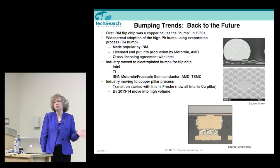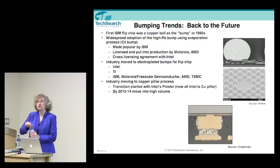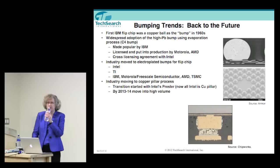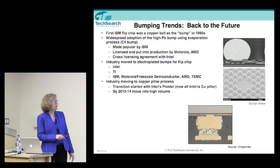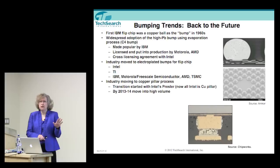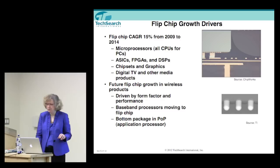The industry moved from evaporated bumps to plated bumps, which is pretty much what we use today — found in all Intel processors, TI, IBM, Motorola (now Freescale), AMD, and TSMC. The industry is now in the process of moving to something new called a copper pillar or copper post. I like to call this 'Back to the Future' — we started with copper and we're going back to copper. The difference is that on this post there's a small solder cap on top. Intel started this transition with the Pressler processor, and by 2013–2014 we expect copper pillar technology to move into very high volume production.